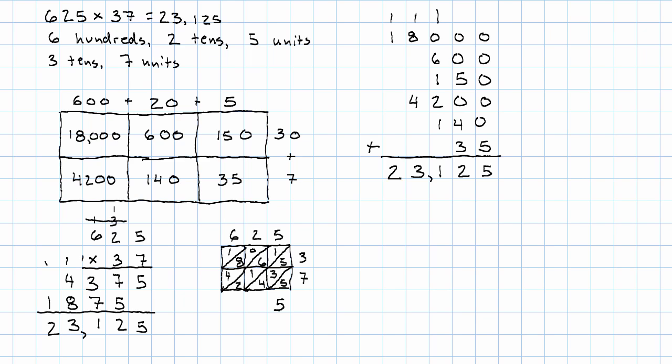And then we add along the diagonals. Here we just have 5. 5 and 3 is 8 and 4 is 12, carry the 1. 1, 2, 8, 9, 11. 1, 9, 13. 13 and 2.